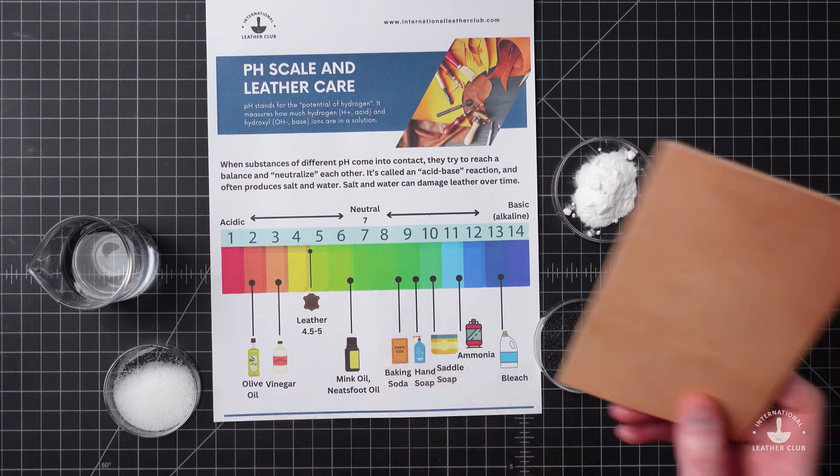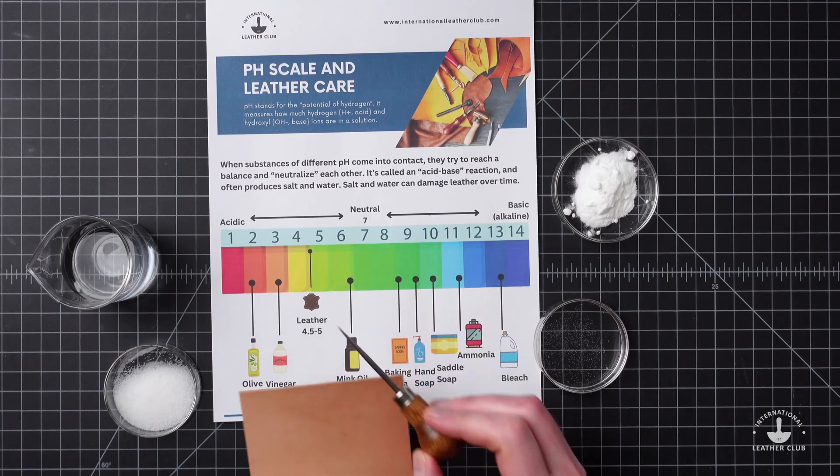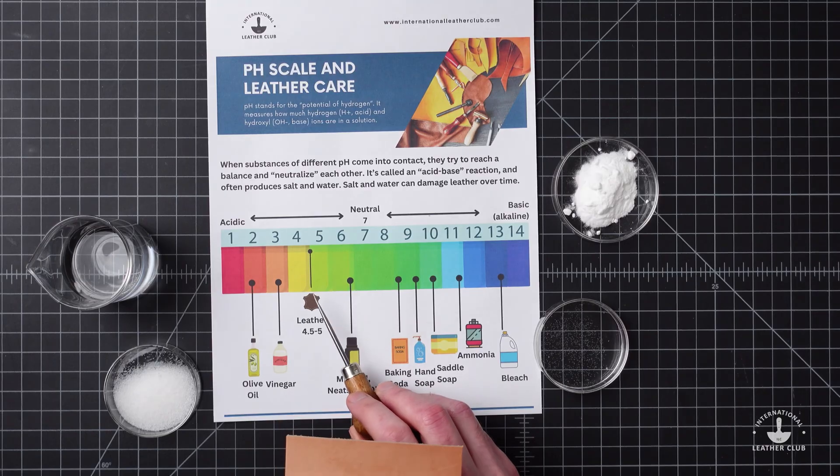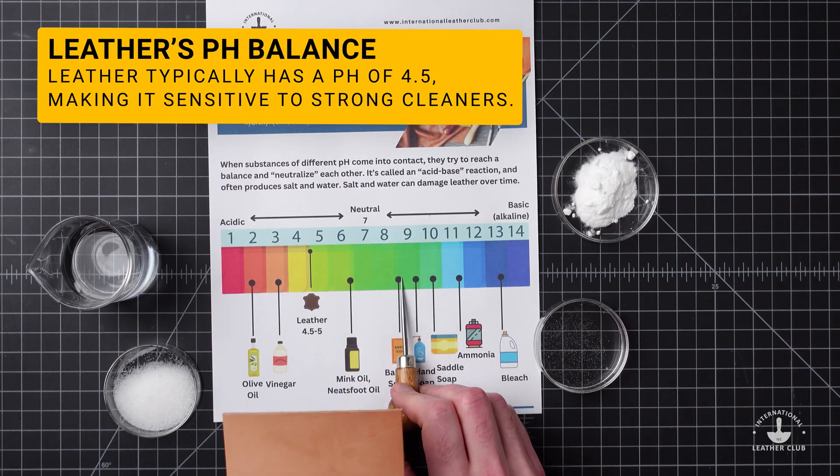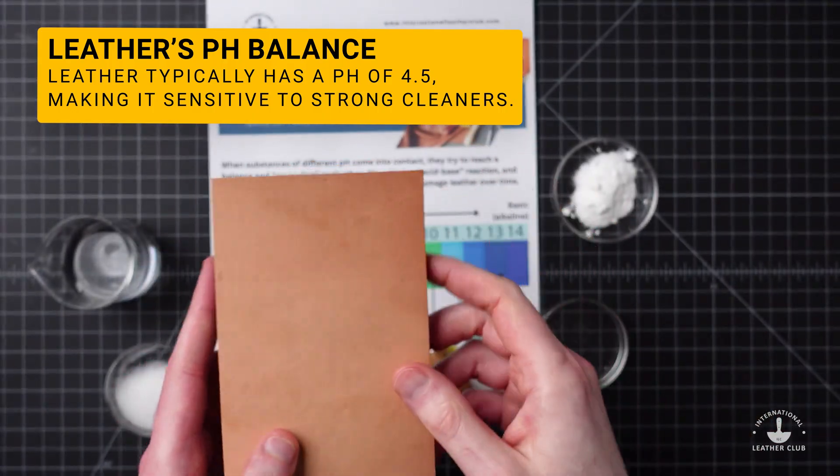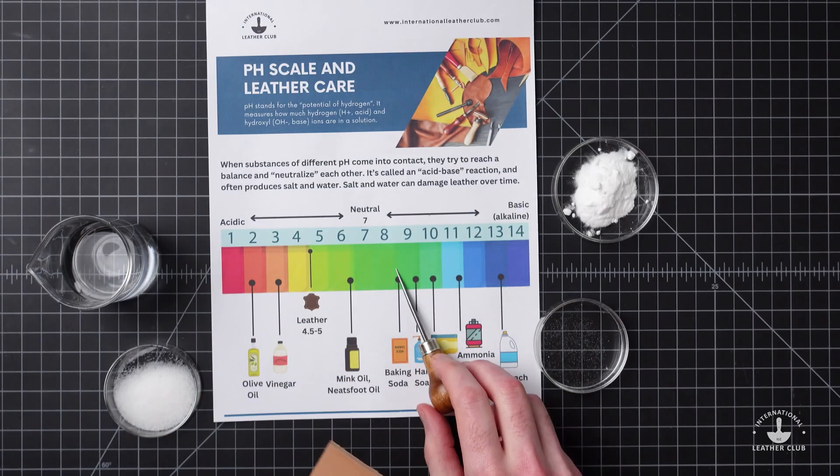For example, leather has a pH of around 4.5. Anytime a cleaner or a conditioner with a different pH than the leather is applied, that acid-base reaction is going to occur in the fibers. That's going to try to neutralize and balance out those different pHs.